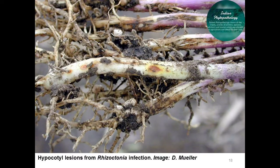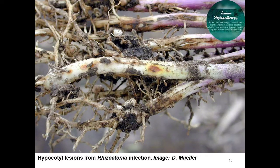Both pre- and post-emergence damping-off can occur due to Rhizoctonia seedling blight. Infected seedlings have reddish-brown lesions on the hypocotyl at the soil line. These lesions are sunken and remain firm and dry, showing dry root rot symptoms. The root rot phase may persist into late vegetative to early reproductive growth stages, and symptoms may disappear if infected plants grow out of the root problems, although plants may remain stunted.